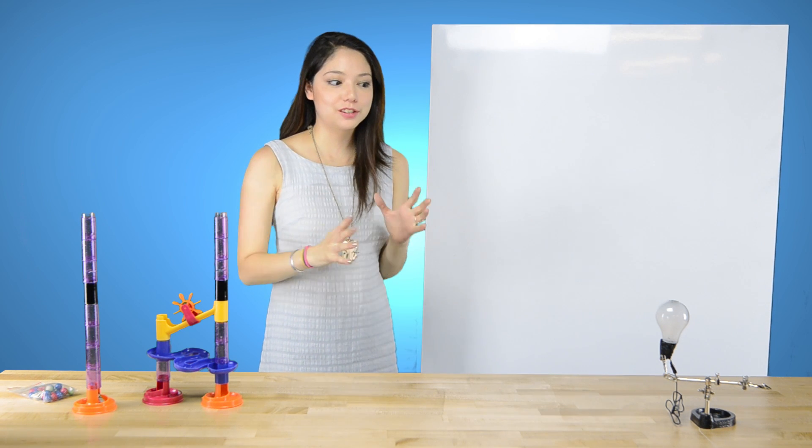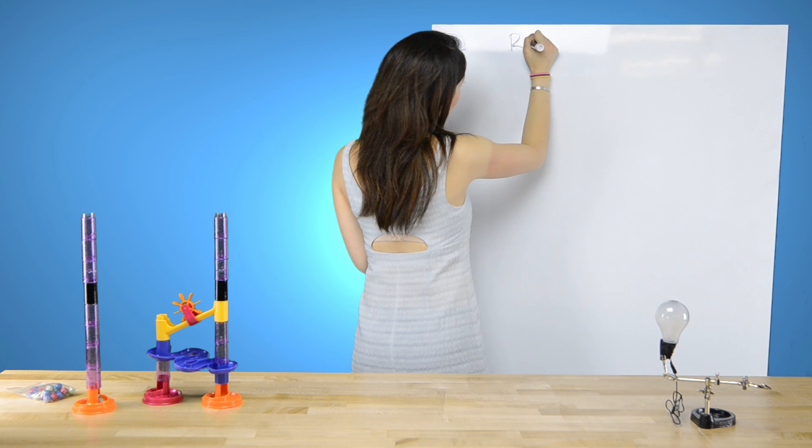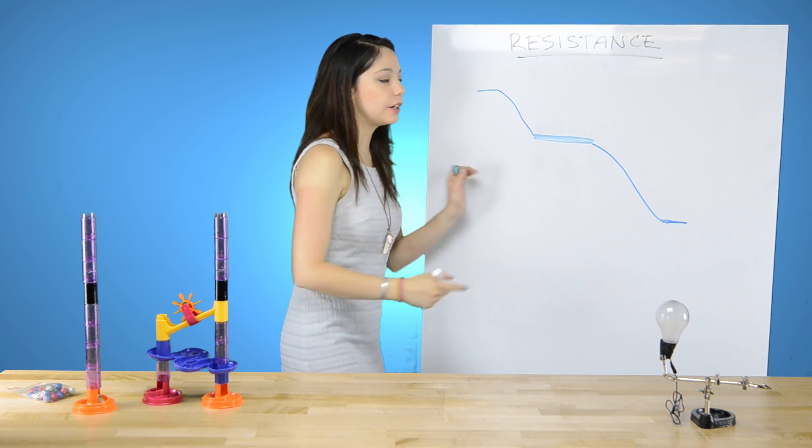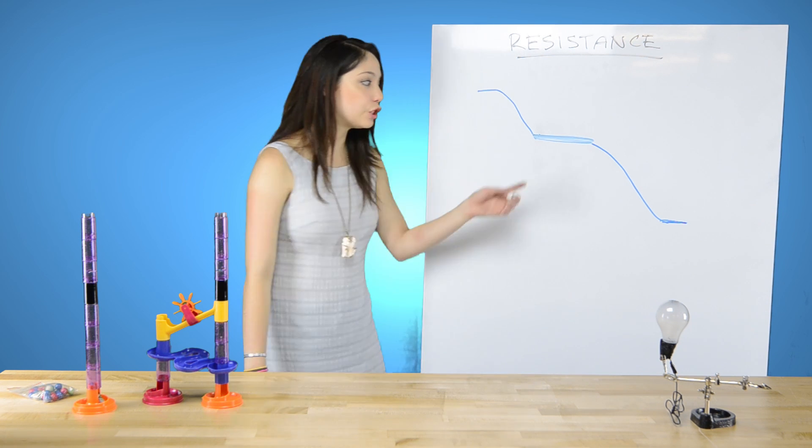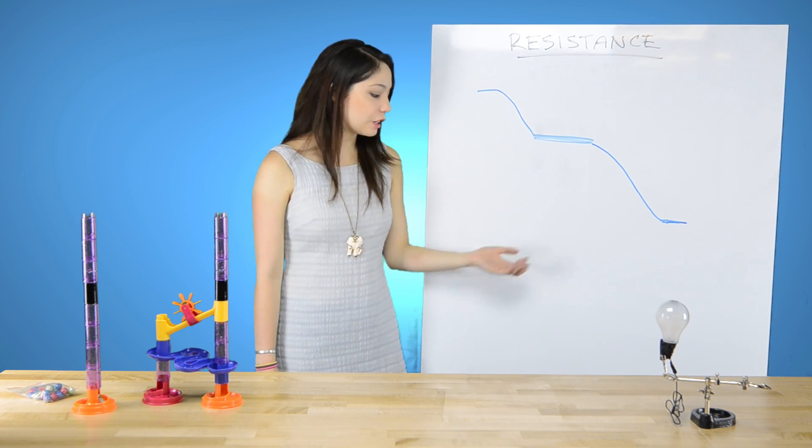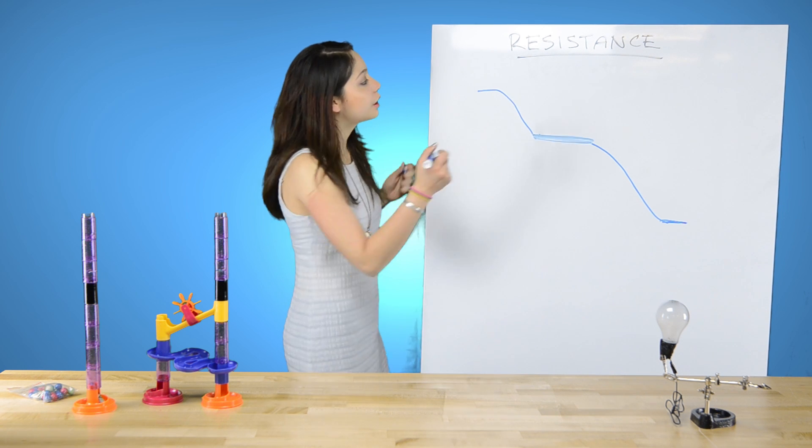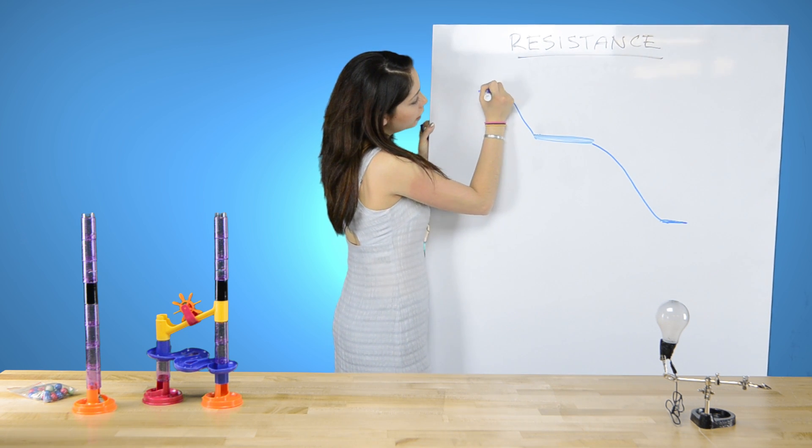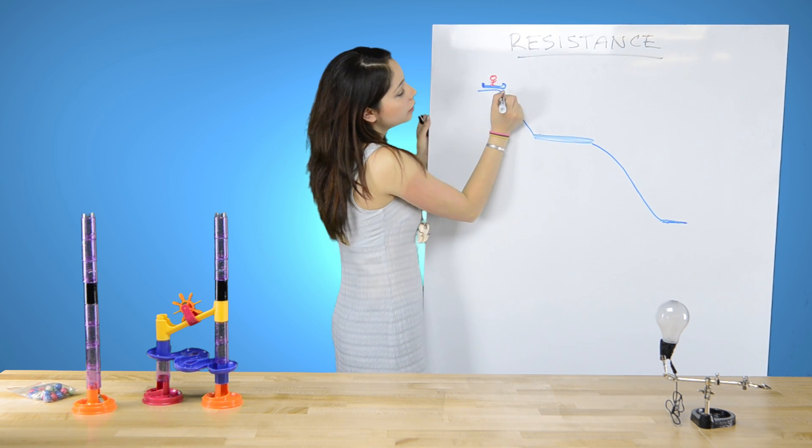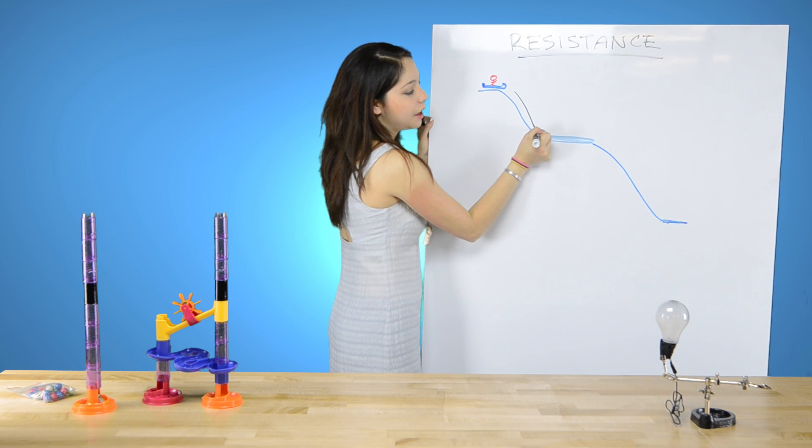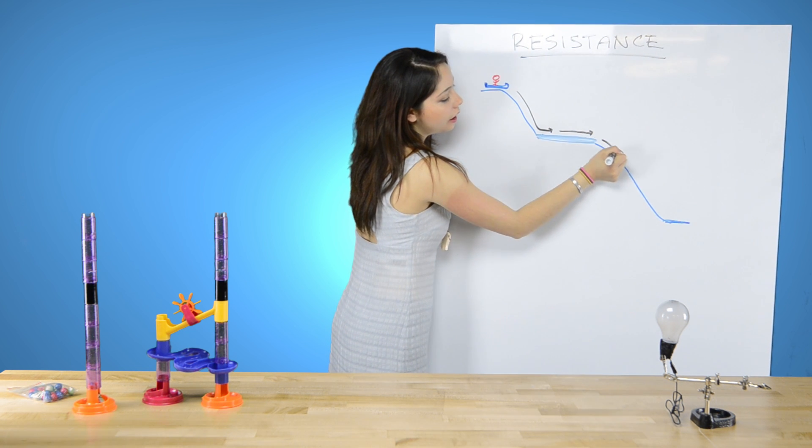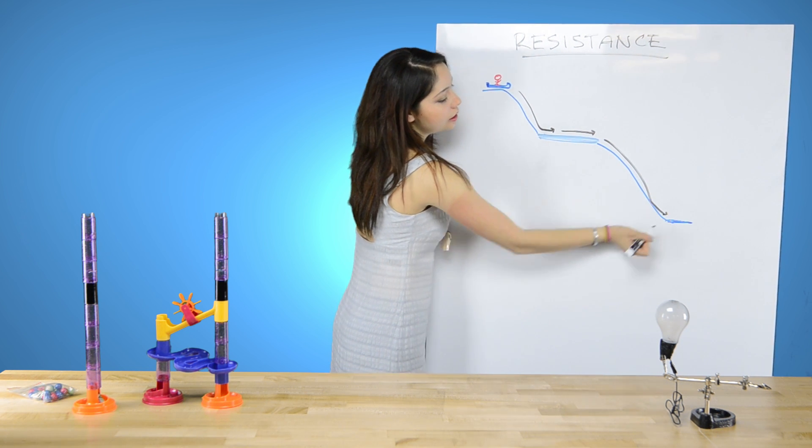So the next concept we're going to go over is called resistance. This plateau here, that's the resistor. So that basically just slows down the flow of electrons. So now, when Carl gets on his little roller coaster car, he's going to go down and then plateau. And that'll slow him down. And then down the rest to zero.